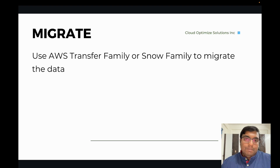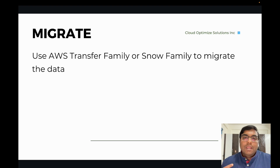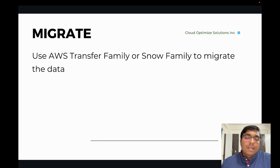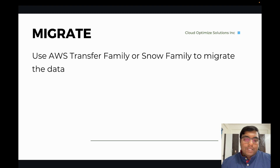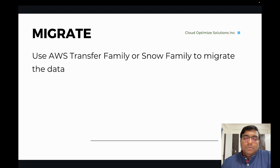And then you have the SNOW Family. If you have remote location offices where you don't have a good enough internet connection, you can request a device from the SNOW Family based on the amount of data you're going to upload. They send you a device with some compute power in it, you load the data into it and send it back, and they upload it to AWS for you. Those are the primary ways for SMBs to move data to AWS.